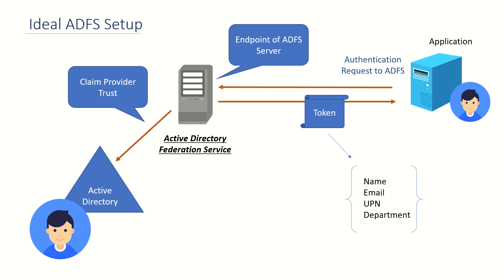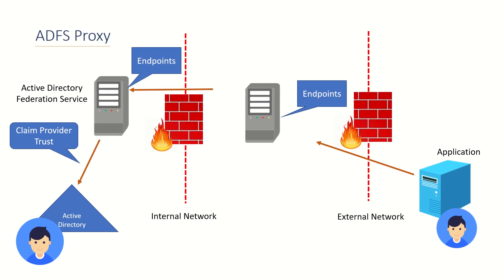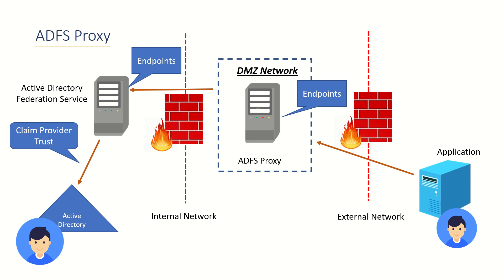What if all the endpoints of your ADFS server could be made available on a different machine? When an external application tries to reach any endpoint of your ADFS server, the request would first reach this particular machine, which would then forward the request to your ADFS. ADFS gets the authentication done and the token is sent back to the application. In these scenarios we call this server an ADFS proxy server, because we are proxying all the ADFS endpoints on a different machine, adding one more layer of security and protecting the internal ADFS farm with a firewall.